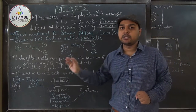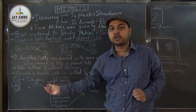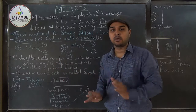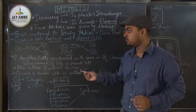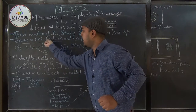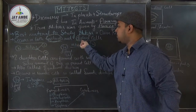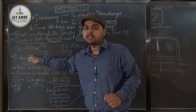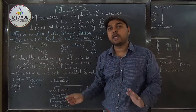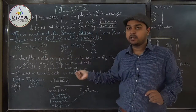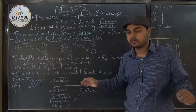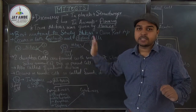Mitosis is called equational division because whatever the number of chromosomes and DNA in the parent cell, the same number is present in the offspring. Suppose there is a haploid cell — if mitosis occurs in it, the offspring will also be haploid. If there is a diploid cell and mitosis occurs, the offspring will also be diploid. So it is an equational type of division.